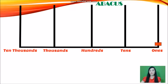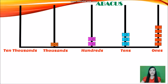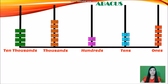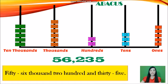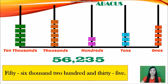Let me count in the 1s place: 1, 2, 3, 4, 5. And in the 10s place: 10, 20, 30. In the 1s place we got 5, 3 in 10s, 2 in 100s, 6 in 1,000s, 5 in 10,000s. So we can read the number as 56,235.